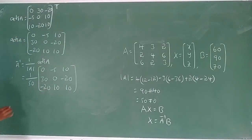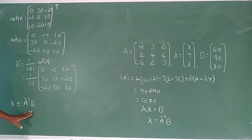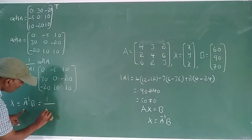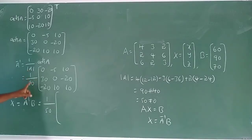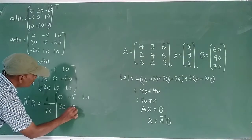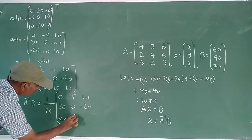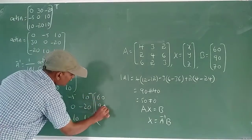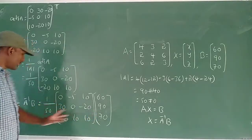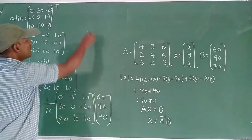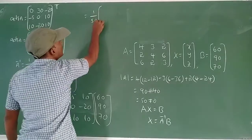Capital X equals A inverse × B. That equals (1/50) × [0, −5, 10; 30, 0, −20; −20, 10, 10] × [60; 90; 70].